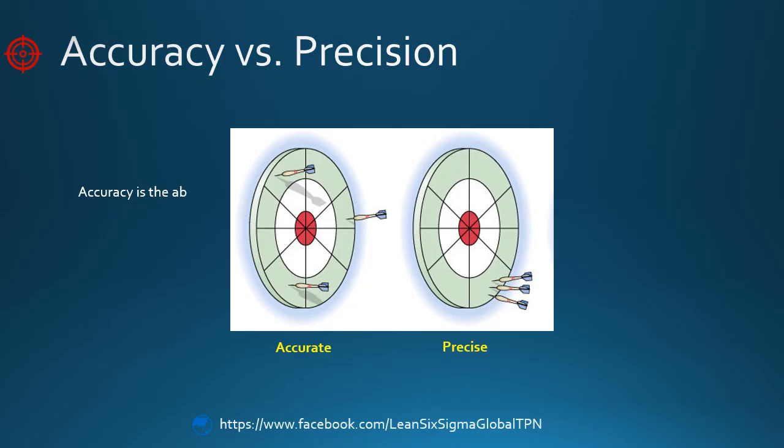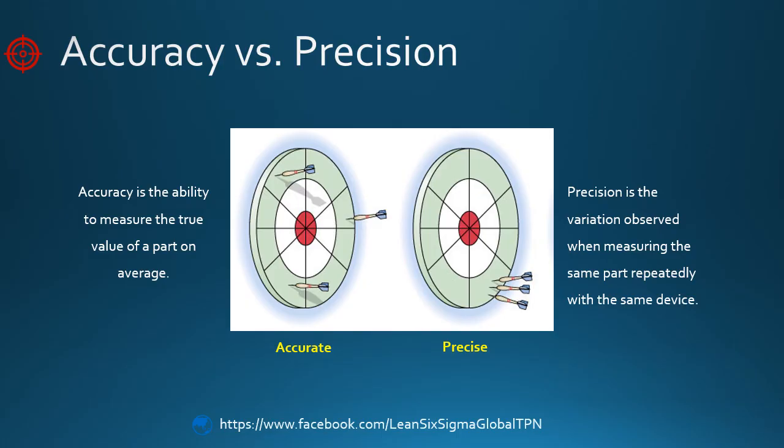Accuracy refers to the ability to measure the true value of a part on average, while precision refers to the variation observed when measuring the same part repeatedly with the same device, i.e., consistency of the measurement system.